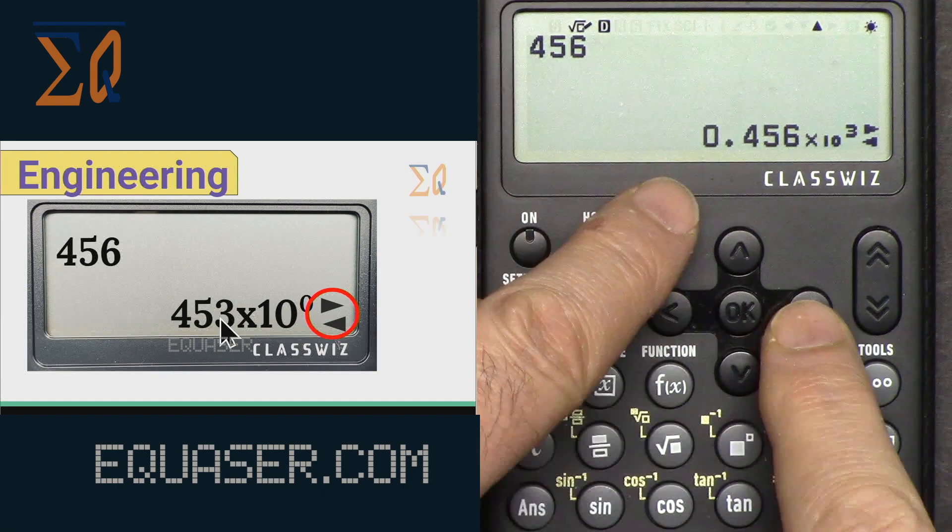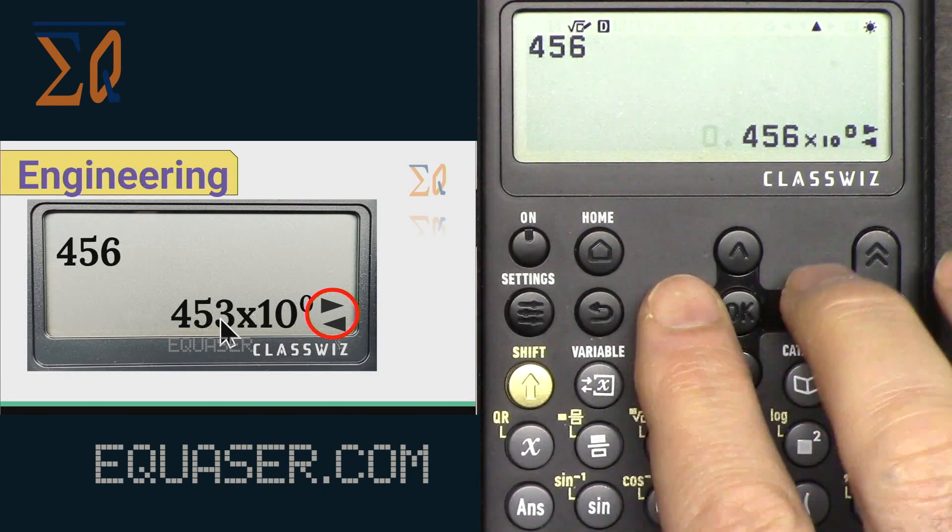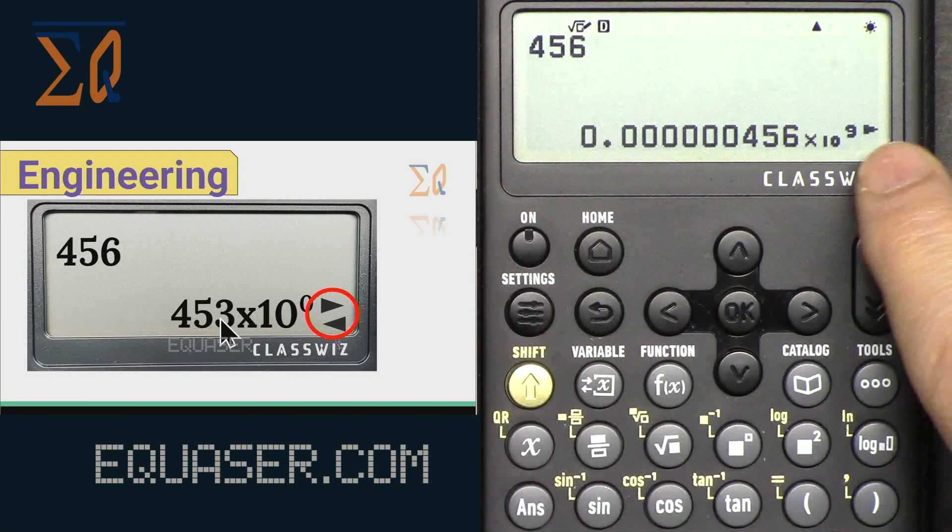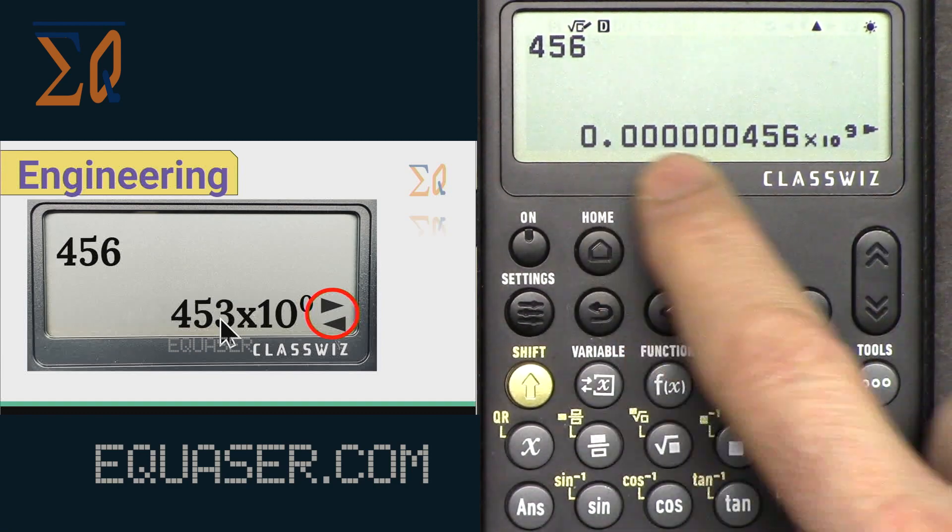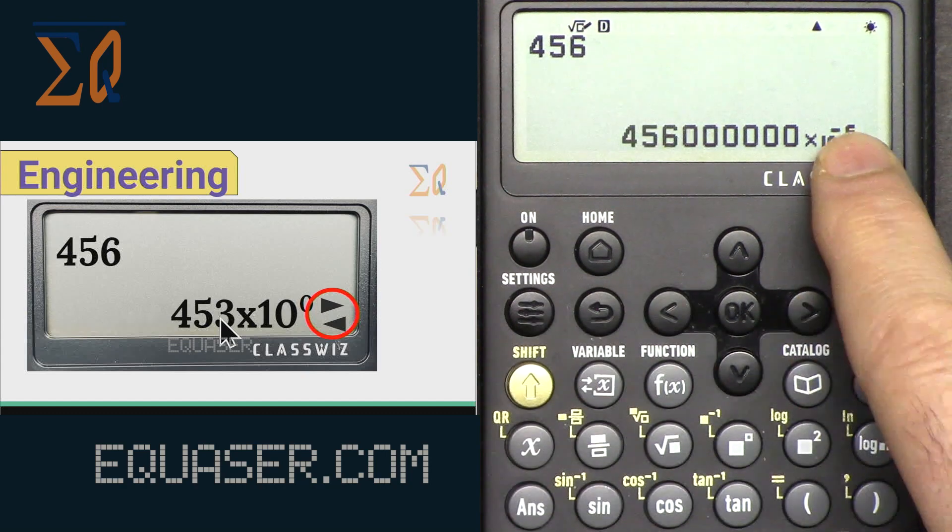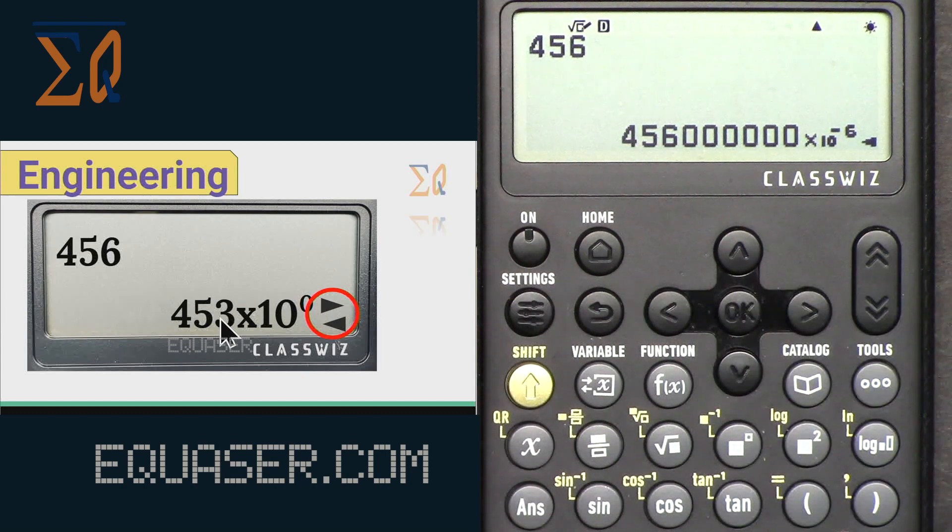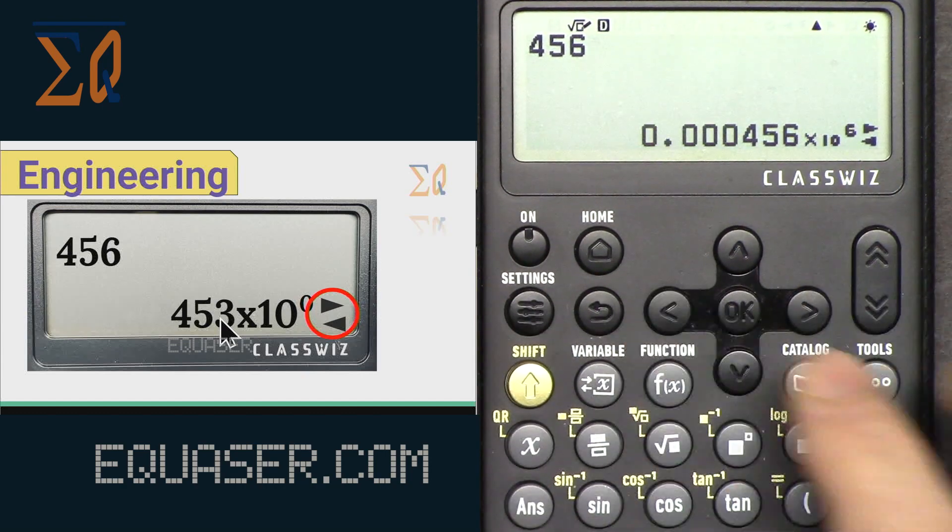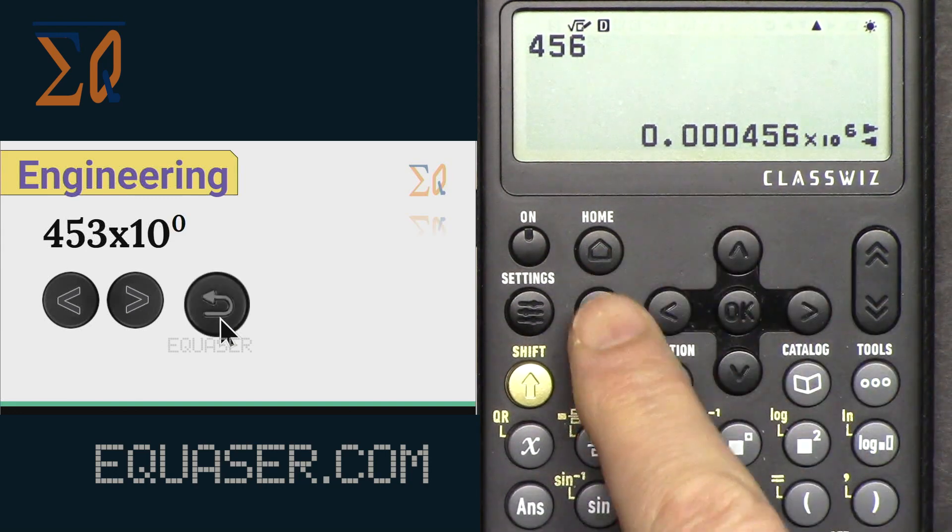So now this arrow is here. It's telling you that if you go left and right you can change it, the number of the power changes, but we can represent it in this format or if we go this way with a negative exponent. If you want to exit just press this button and you go one step back and exit.